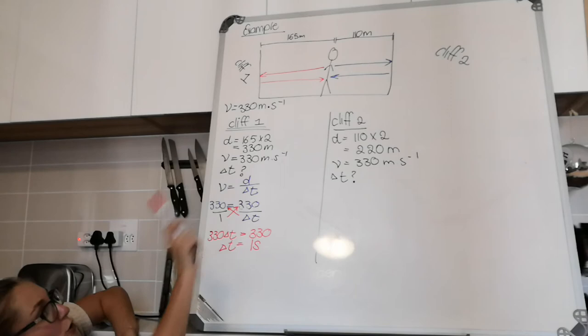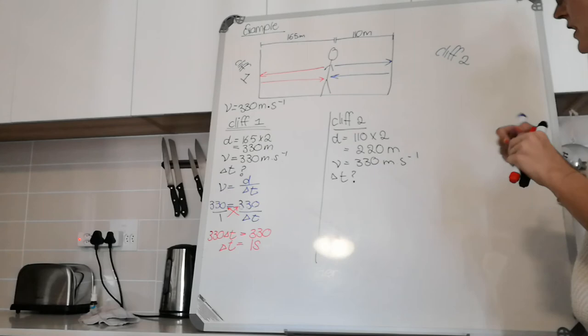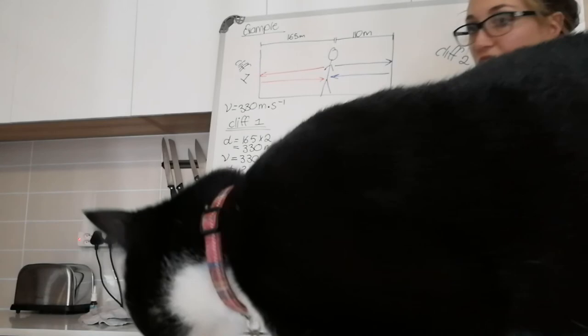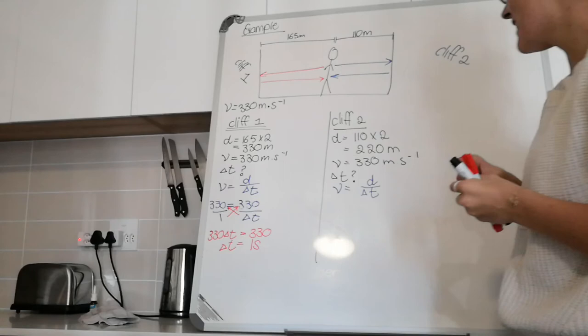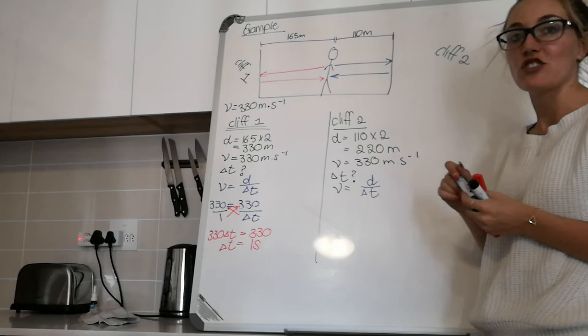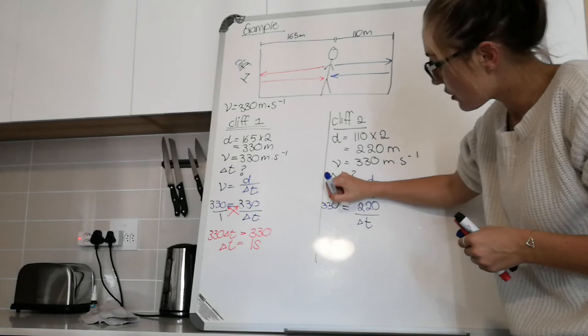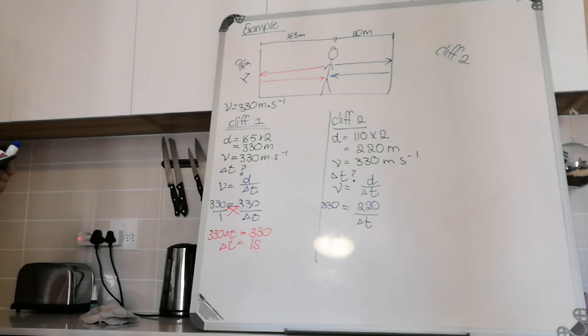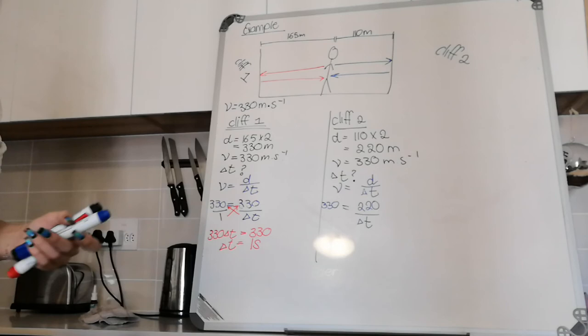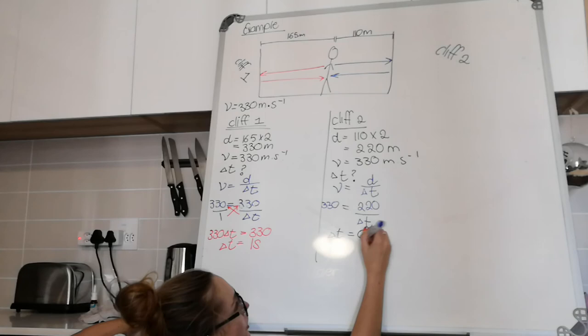Same process for cliff two. We know that the velocity of the wave is the distance it must travel over the change in time. The velocity will be the distance it must travel over the change in time. We know the distance it must travel is 220, we want the change in time, and the speed is 330 meters per second. When we actually calculate this, I think it's 0.66—220 divided by 330 is 0.66666 recurring. So our delta t for cliff two is 0.67 seconds.